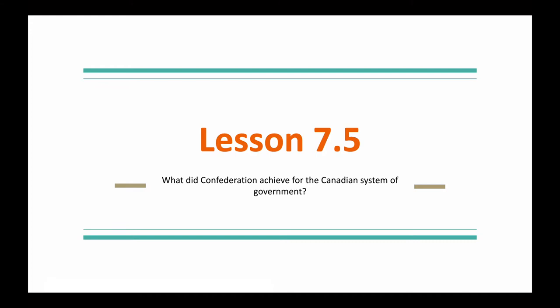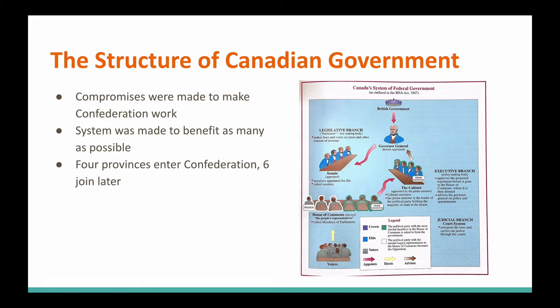What did Confederation achieve for the Canadian system of government? We know from previous lessons that a lot of compromises were needed and it took a lot of work for Confederation to actually happen. The system was designed to benefit as many people as possible. At first, only four provinces felt comfortable creating this union, and later more provinces decided to join. Today we've got 10 provinces and three territories that make up Canada.